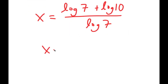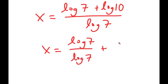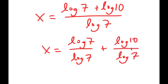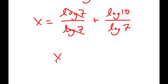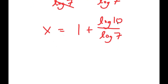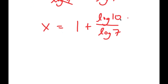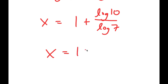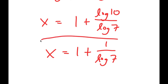I can rewrite this as log 7 over log 7 plus log 10 over log 7. Log 7 over log 7 cancels out, so I get x equals 1 plus log 10 over log 7. Since log 10 is equal to 1, x equals 1 plus 1 over log 7. And this is my answer.